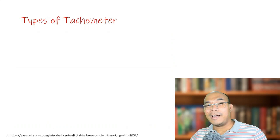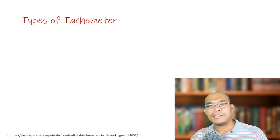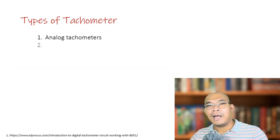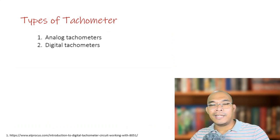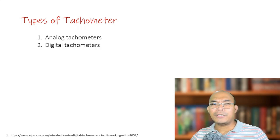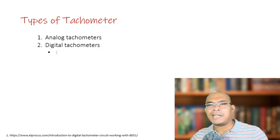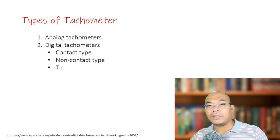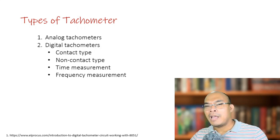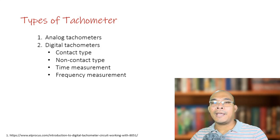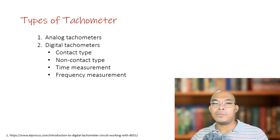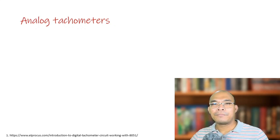This device has two main types: analog and digital. Digital tachometers can be further classified into contact type, non-contact type, time measurement, and frequency measurement.